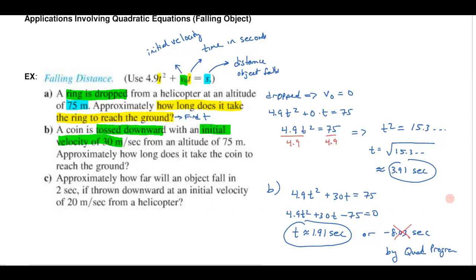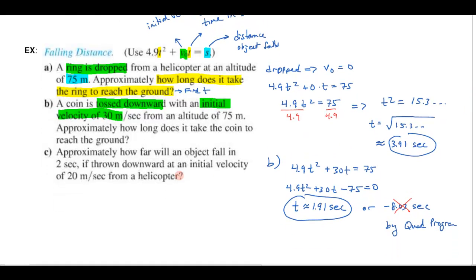Let's move on to part C here. Part C says that approximately how far will an object fall, oh well now this is different, how far this is asking us for S isn't it, in 2 seconds so there's my time if it's thrown downward an initial velocity of 20 meters per second. So now I have an initial velocity of 20 meters per second. So I have this formula I've got 4.9t² plus the V₀t, now in this case the V₀ they told me was 20 and I'm looking for S, I'm looking for how far and they told me that the time is 2 seconds.